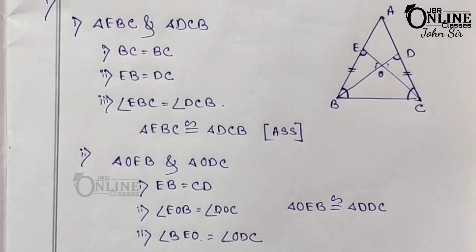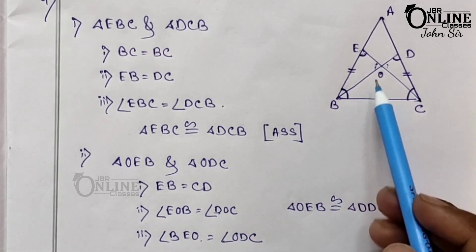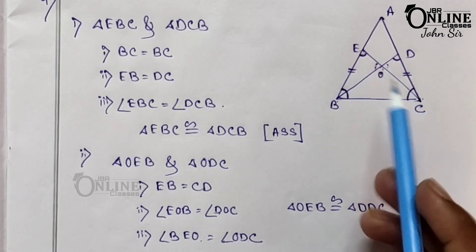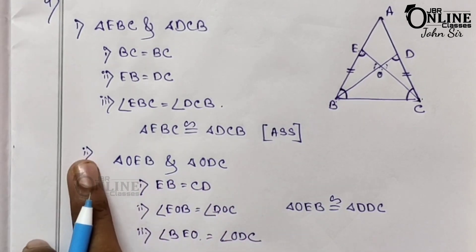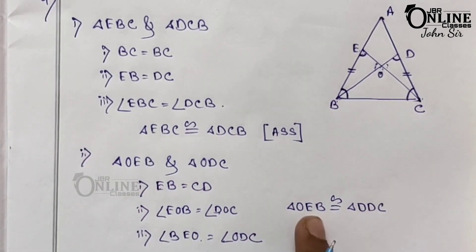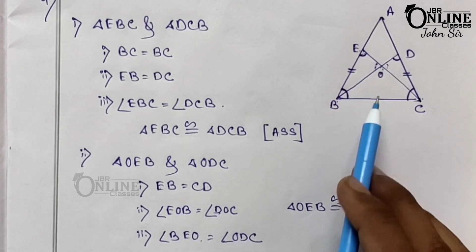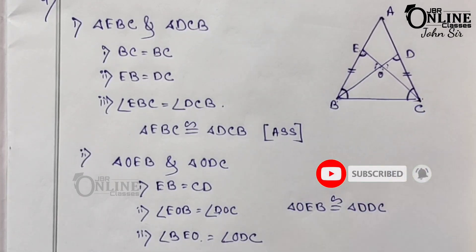Now the third part: prove OB equal to OC. As these two triangles OEB and ODC are congruent with each other from proof number two, then by CPCT, OB equal to OC. It is proved.